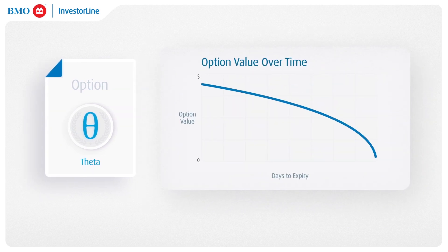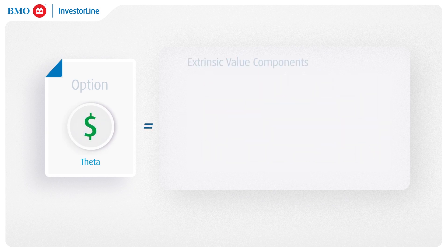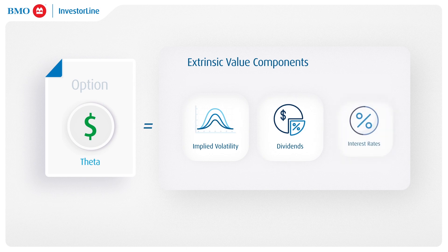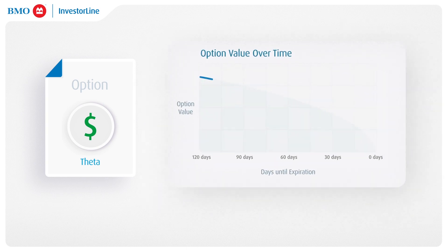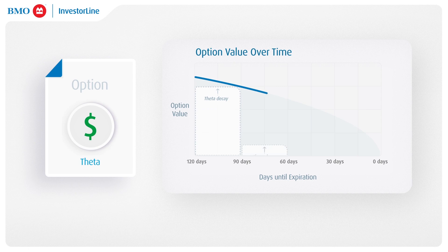Theta does not only represent the time decay component of an option's premium, but encompasses all extrinsic value components inclusive of implied volatility, dividends, and interest rates. In simple terms, Theta represents how much an option's value is expected to decrease each day, assuming all other factors remain constant.